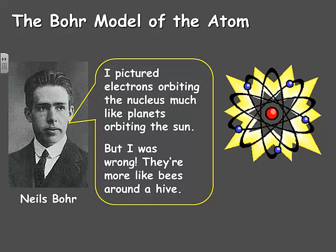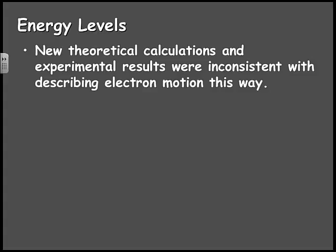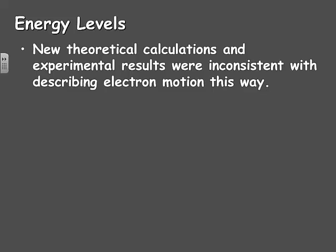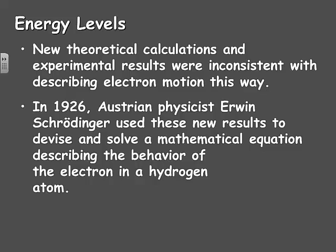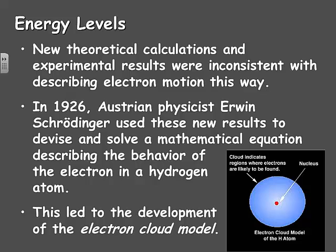Now Niels Bohr said that he pictured electrons orbiting the nucleus much like planets orbiting the sun, but he was wrong. They're a lot more like bees around a hive. They don't follow necessarily very specific paths. New theoretical calculations and experimental results were inconsistent with describing electron motion in this way. In 1926, Austrian physicist Erwin Schrödinger used these new results to devise and solve a mathematical equation describing the behavior of the electron in a hydrogen atom.